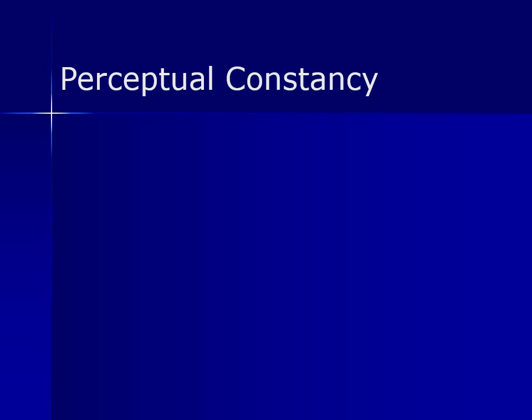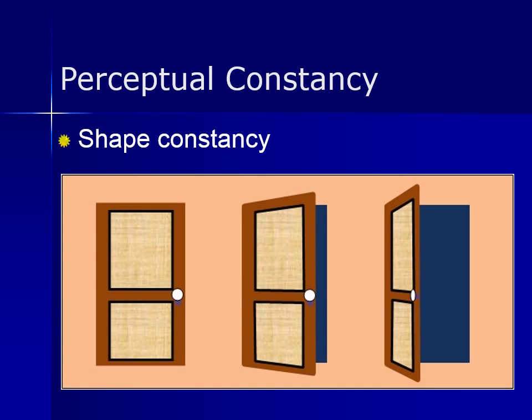Part of perceptual organization is perceptual constancy. This includes shape, brightness, and size. Shape constancy is a process that allows us to recognize people and other objects from many different angles. Take this image of a door: although the shape of the door changes in each picture, we still tend to view the door as a rectangle even though the angles have changed. Shape constancy is based on the perceptual system's ability to take viewing angle into account when determining an object's true shape.